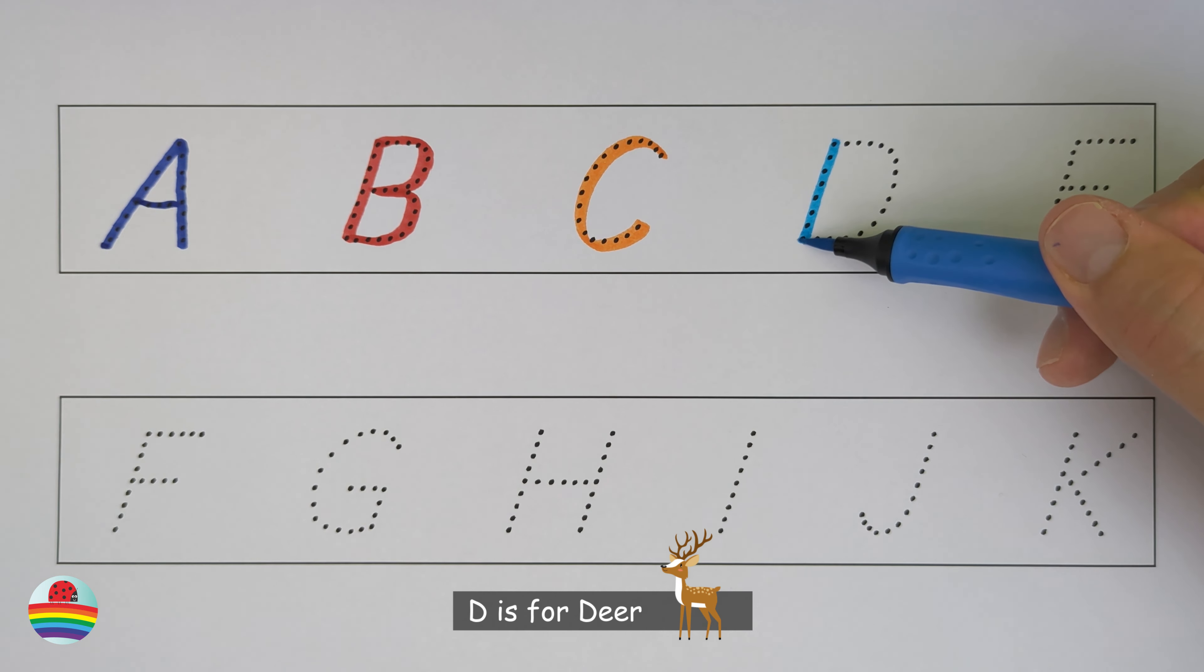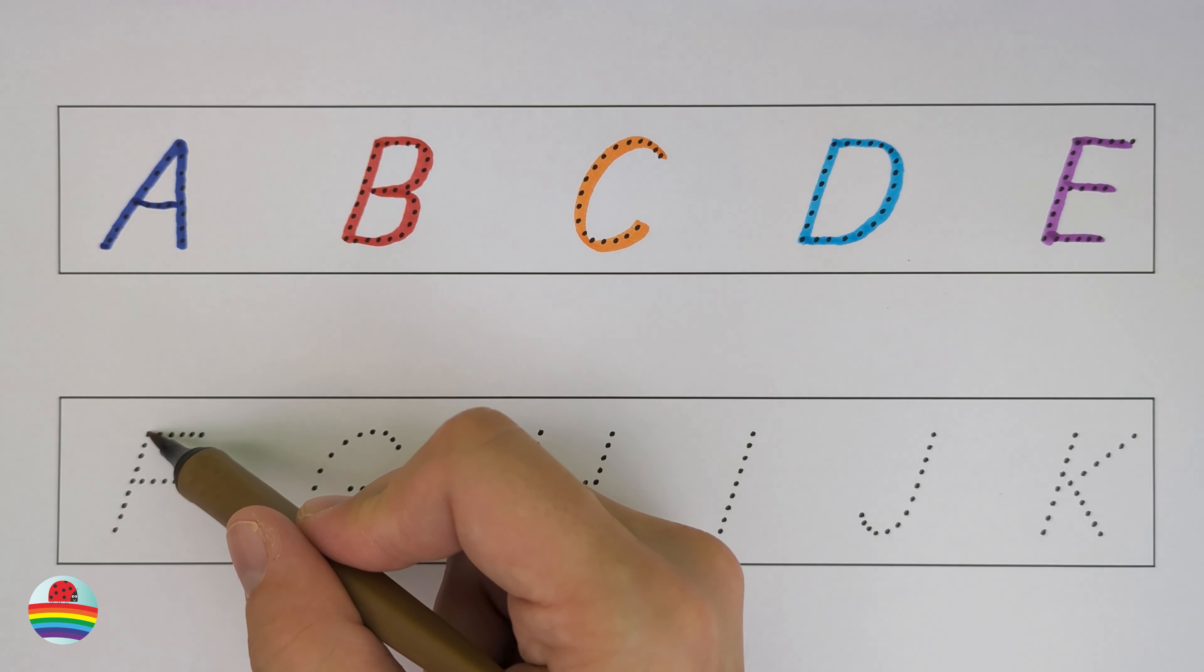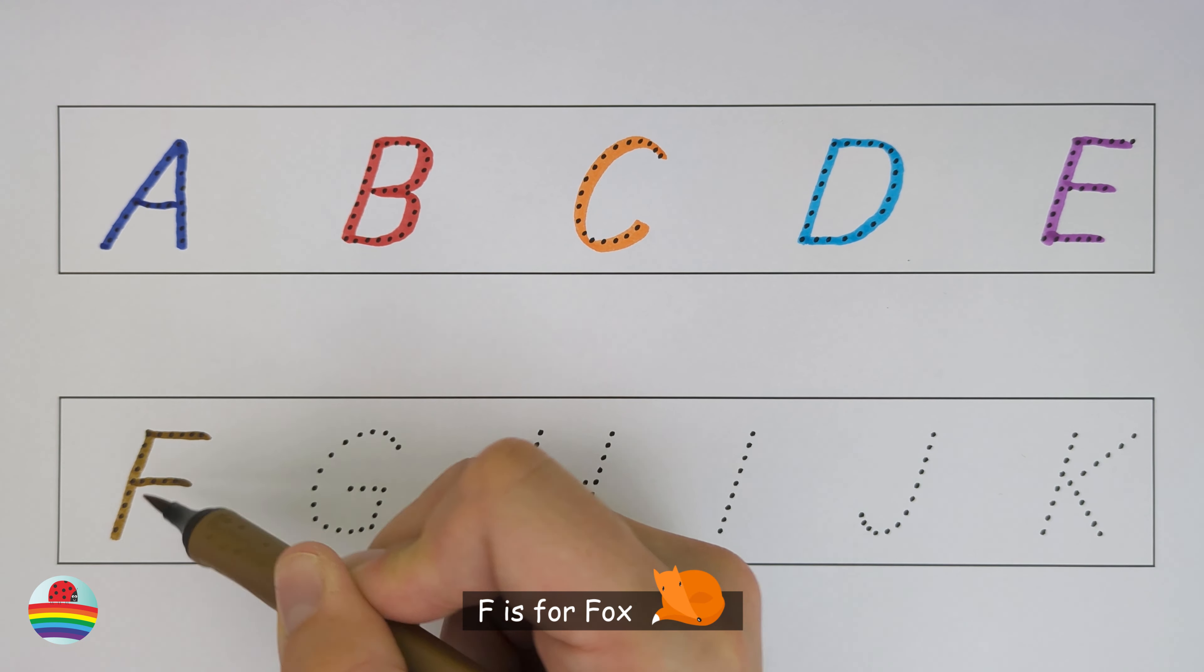D. D is for deer. D. E. E is for elephant. E. F. F is for fox. F.